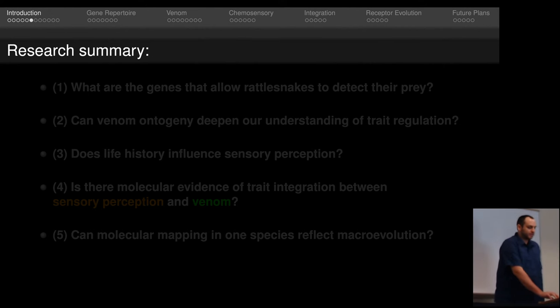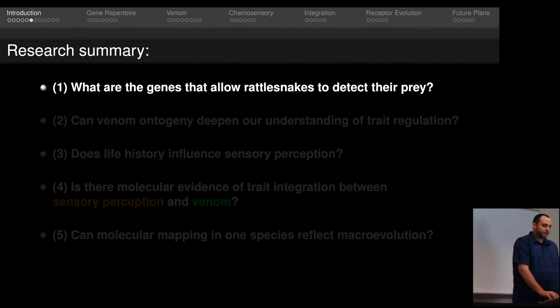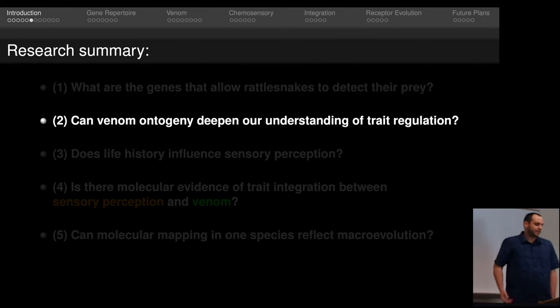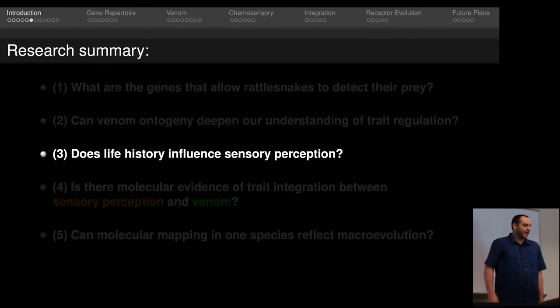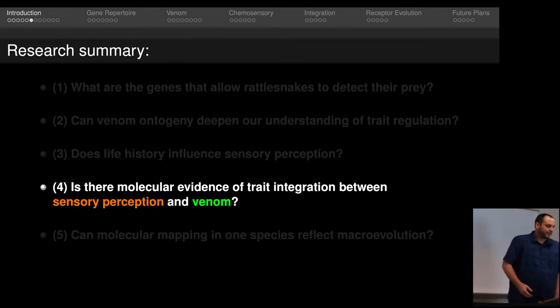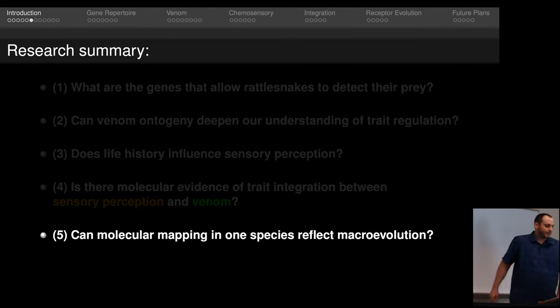So to summarize my research, my initial goal was to try to figure out what are the genes that allow rattlesnakes to detect their prey. From there, I investigated if venom ontogeny can deepen our understandings of trait regulation. Then I looked at if life history had any influence on sensory perception in rattlesnakes. Then I looked at if we could find molecular evidence for trait integration between sensory perception and venom. And last, I wanted to know, could molecular mappings in just one species reflect macroevolution.